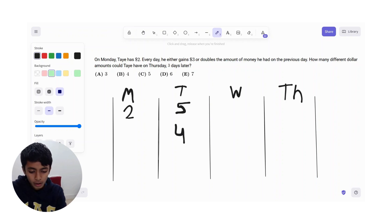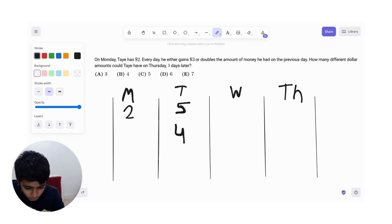On Wednesday, he could add three to this, so he could get eight. Or he could double it, so ten. If you double this, it's eight, which we already have. If you add three, you get seven, so we have three different amounts.